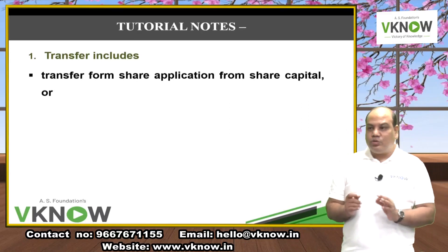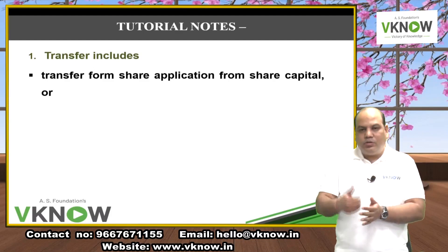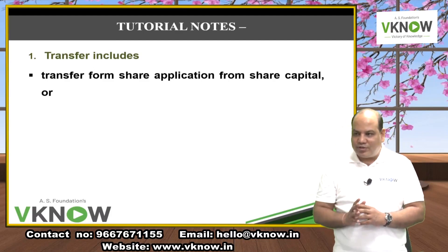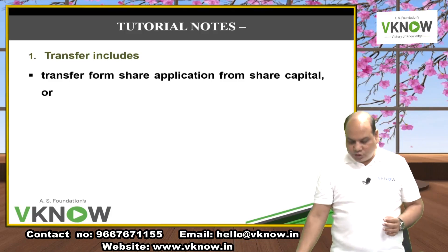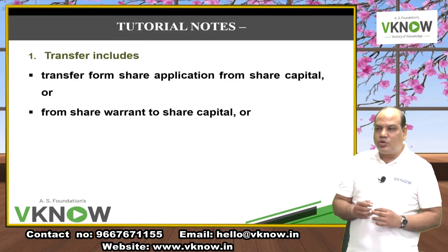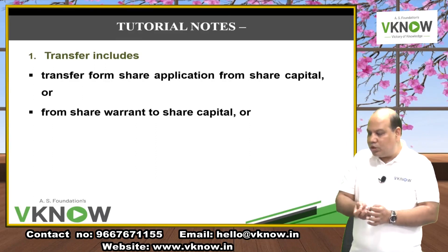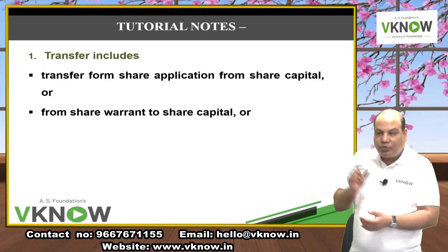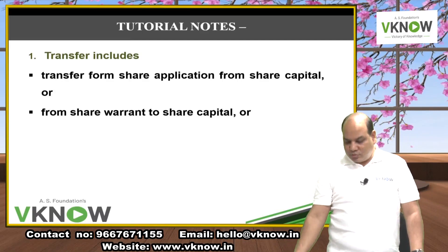On allotment, minus the share application column and add to share capital. Similarly, when share warrant holders exercise their warrants, minus the share warrant column and add to share capital. Company policy to transfer profit to General Reserve: minus from Retained Earnings, plus in General Reserve.